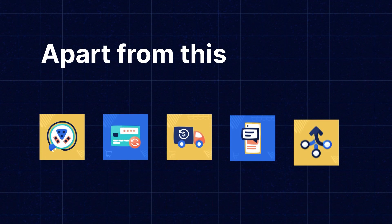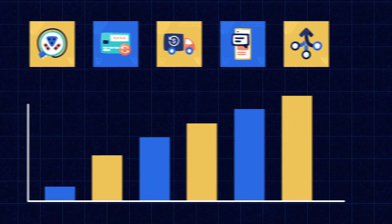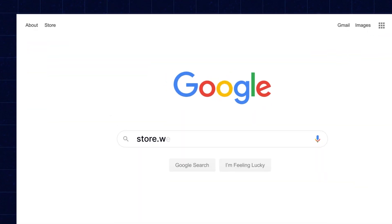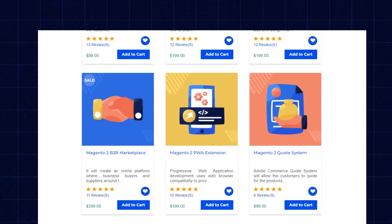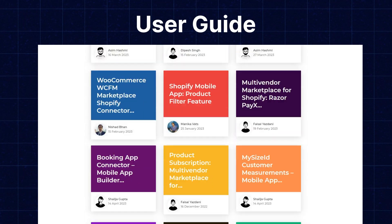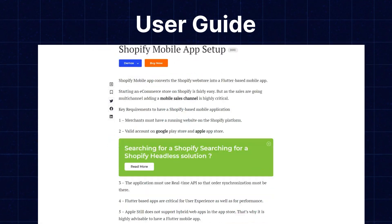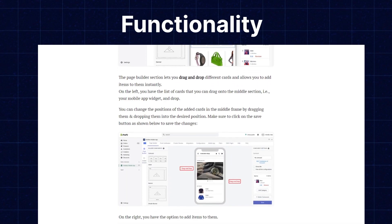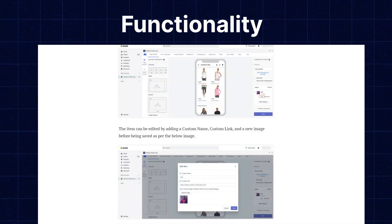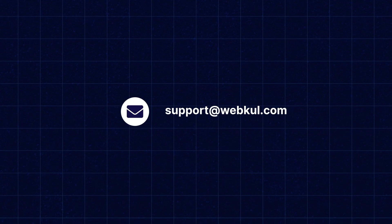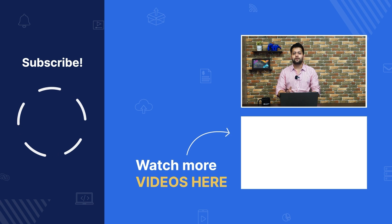So guys, this is all about how to configure Google reCAPTCHA in the Multivendor Marketplace app for Shopify. Apart from this, if you need extensions for increasing the sales of your e-commerce store, you can visit store.webcook.com and explore a number of products for every technology. We also have a user guide in our blog section where you can check the features, configuration, and functionality of the extension. If you still have any further queries, write to us at support@webcook.com or create a ticket on webcook.uvs.com. If you like our video, give us a thumbs up and mention your valuable feedback in the comment section. See you in the next video. Thank you.